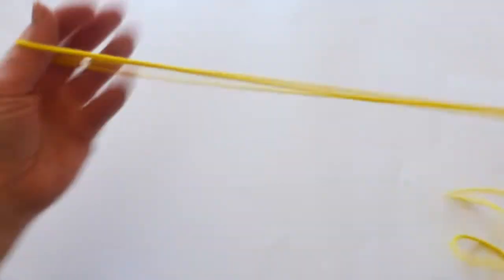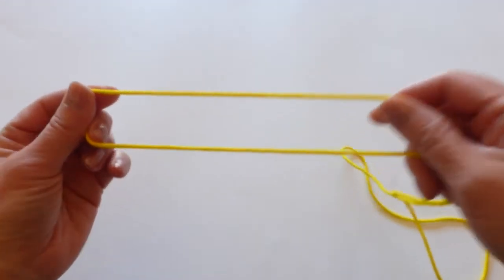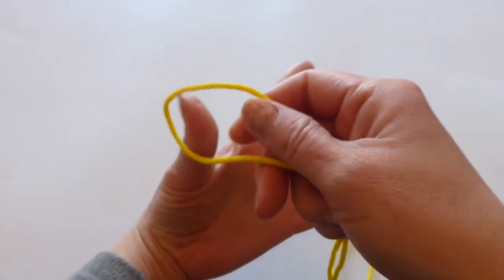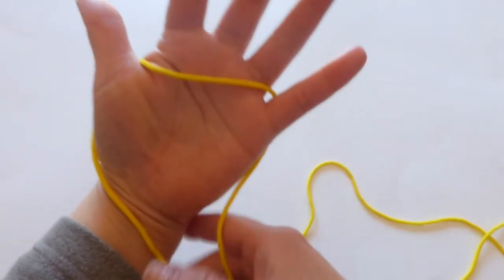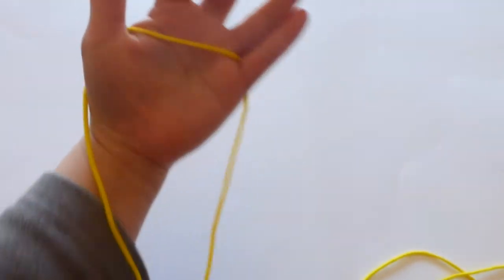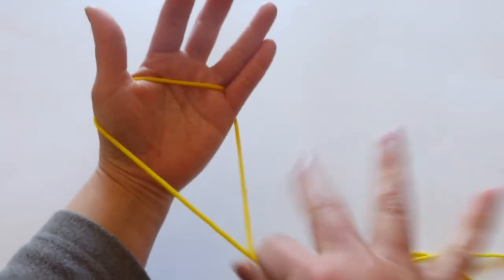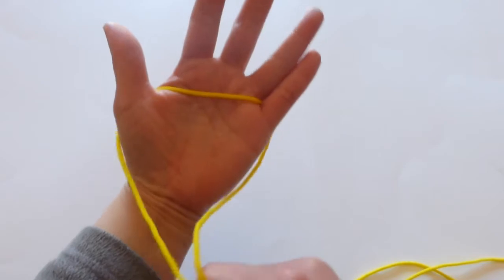First, take any part of the loop and hook it on your thumb and pinky like this, and then pull the rest like this.